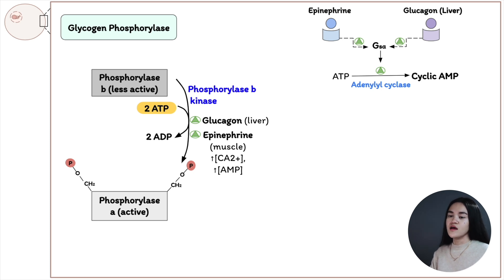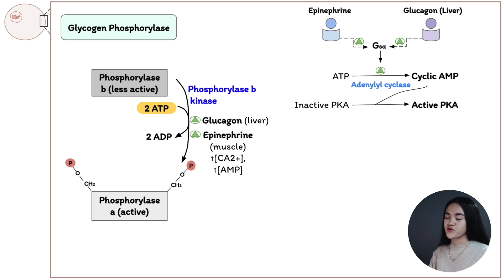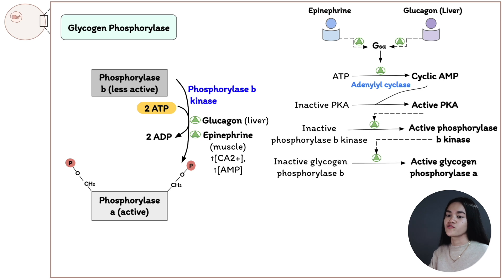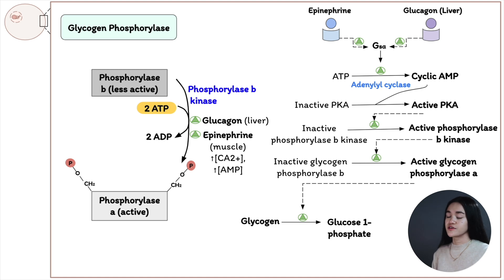The concentration of cyclic AMP increases and triggers protein kinase A, which is cyclic AMP-dependent. Protein kinase A then activates phosphorylase b kinase, which converts phosphorylase b — the less active form — to phosphorylase a, the active form.